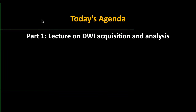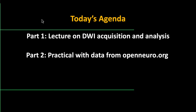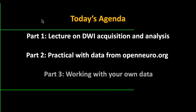Today's agenda is a lecture on diffusion data: what is it, how is it acquired, how is it analyzed? We're going to have a practical with a single subject from OpenNeuro.org, which is an open access repository. If there's time at the very end, people who have questions about their own data can talk to me at the end of this workshop.